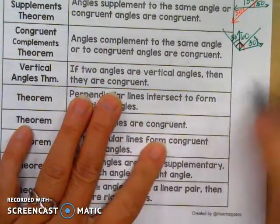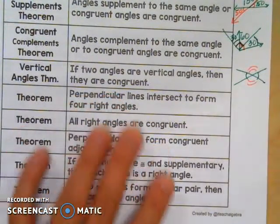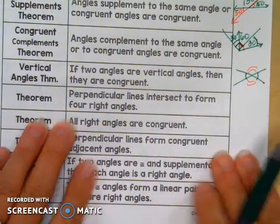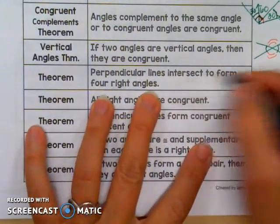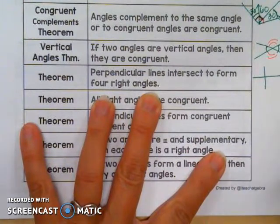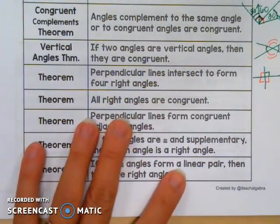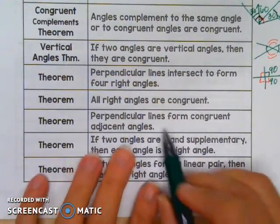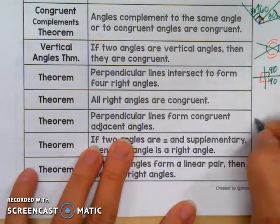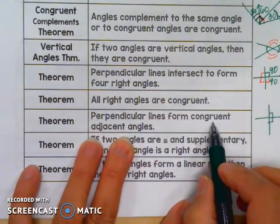Vertical Angles Theorem: two vertical angles are congruent. When we have vertical angles, they are always going to be congruent to each other. Perpendicular lines intersect to form four right angles — not just one right angle, but a total of four right angles. All right angles are congruent because each right angle is 90 degrees. Perpendicular lines also form congruent adjacent angles — the right angles formed are congruent and adjacent.